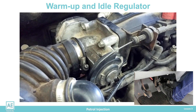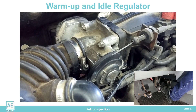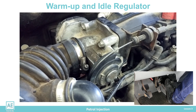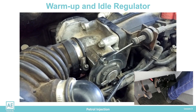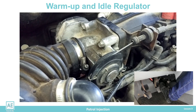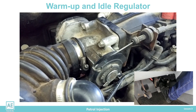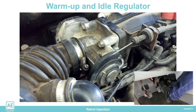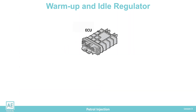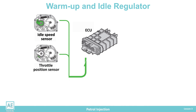The driver acts on the throttle valve and engine speed via the gas pedal and cable. When the driver releases the gas pedal, the throttle valve returns to its initial position and activates the idle speed sensor in the regulator. From this and the throttle position sensor, the ECU receives information that the throttle is in the idle position.